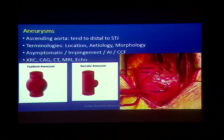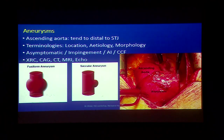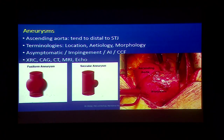For aneurysms in the ascending aorta, they tend to be at the distance to the ST junction and depending on location, the terminologies may vary. They may also vary according to etiology or morphology: fusiform is much more a sausage shape or circumferential, whereas a saccular is much more like an outpouching.